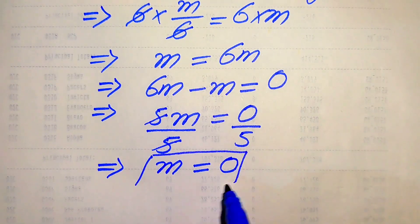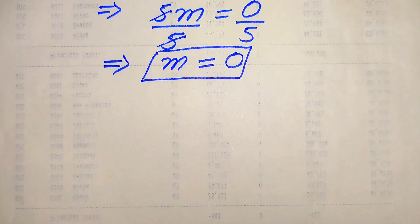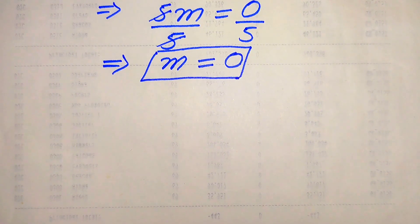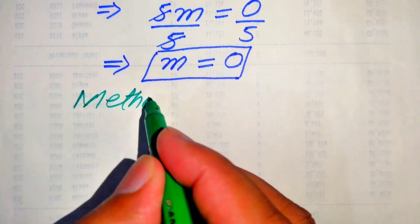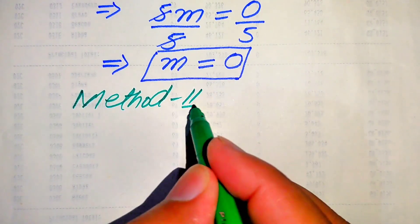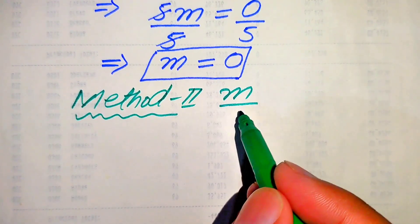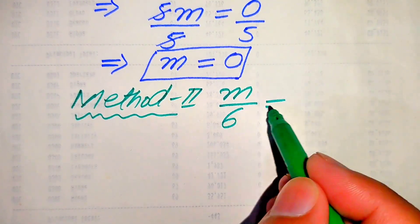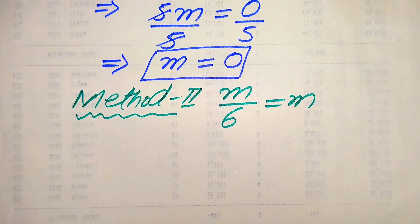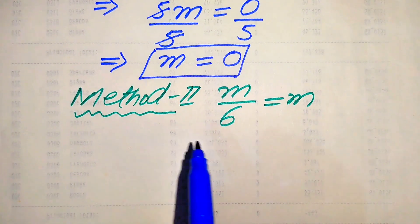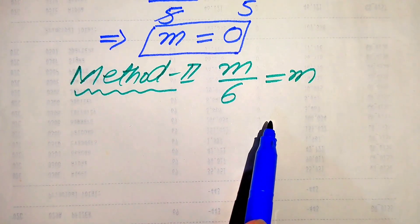We know that 0 over something equals 0, so the final answer from the first method is m equals 0. Now we move forward to the second method. We again copy down the given question statement: m over 6 equals m. In the second method we first move the variable terms to the left hand side.